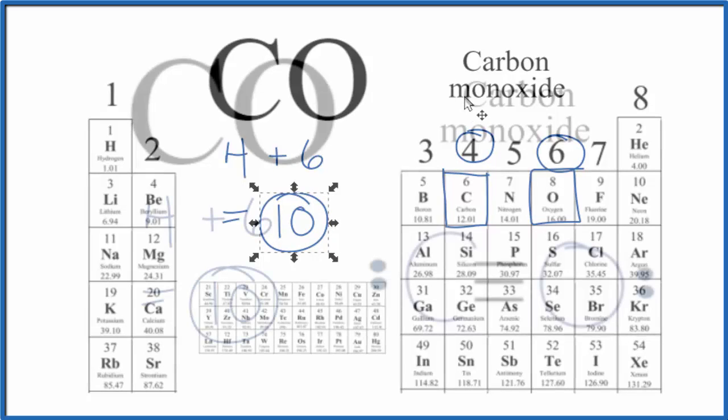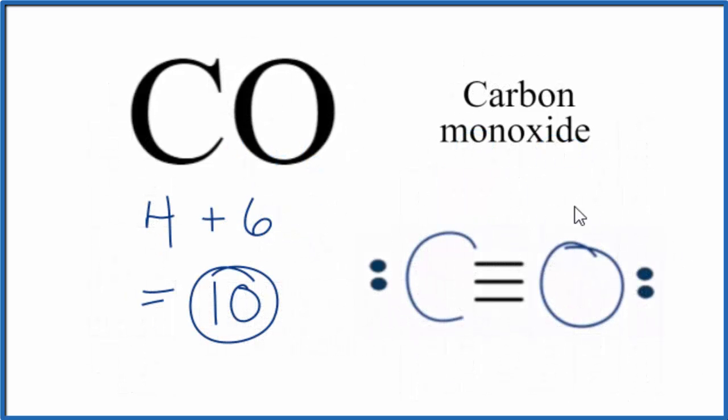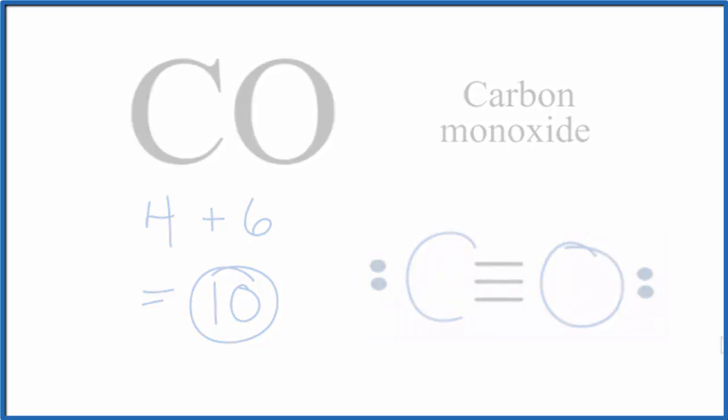That would look like this. If you need help drawing the Lewis structure for carbon monoxide, there's a link in the description and at the end of this video. This is Dr. B, counting the valence electrons for CO, carbon monoxide. All right. Thanks for watching.